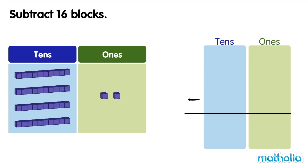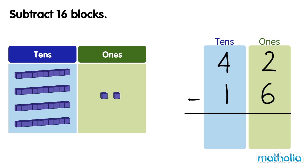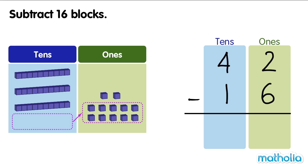Subtract sixteen blocks. There are forty-two blocks. We need to subtract sixteen blocks. Let's start by subtracting the ones. We cannot subtract six ones from two ones. So, we regroup one ten into ten ones.